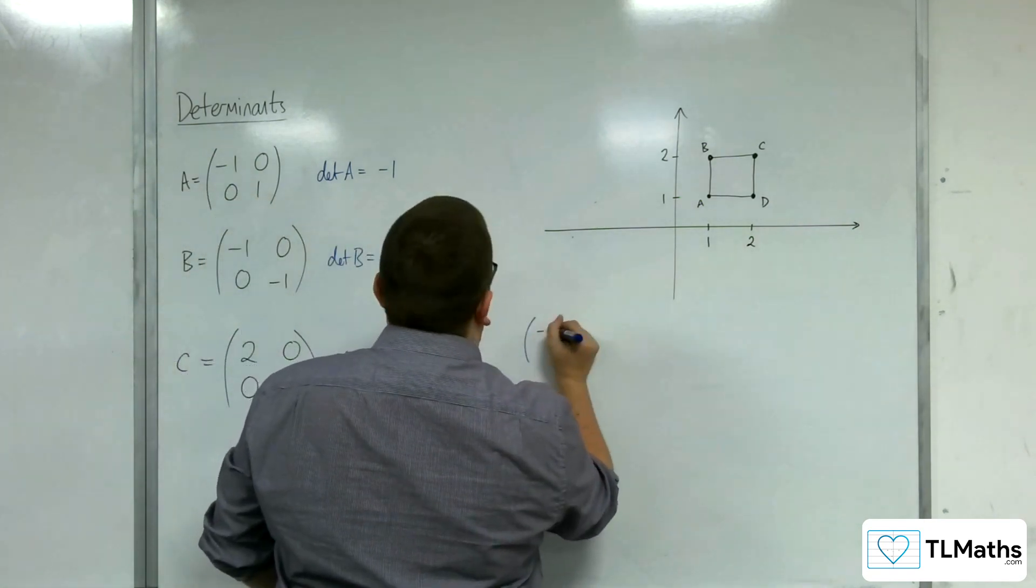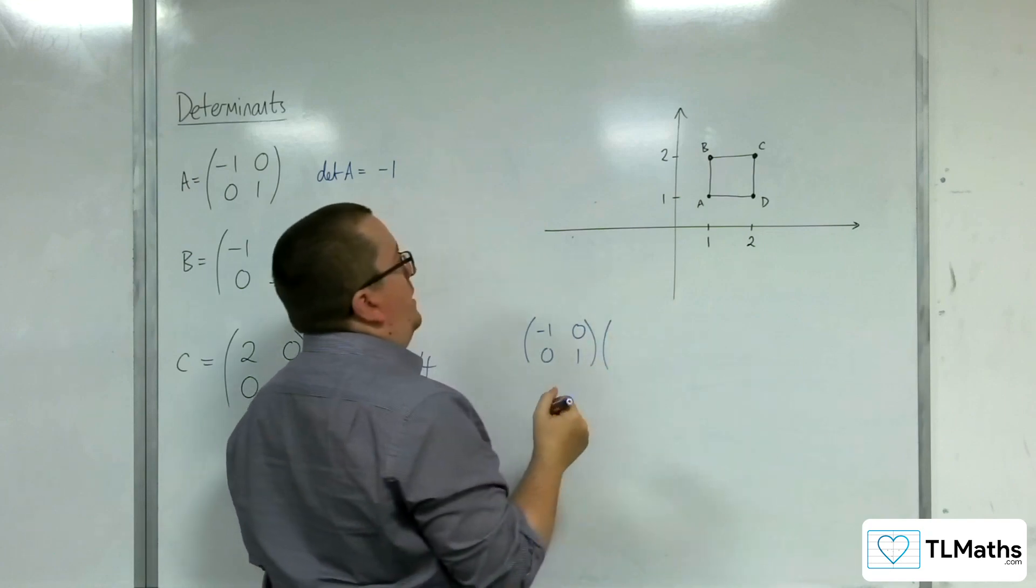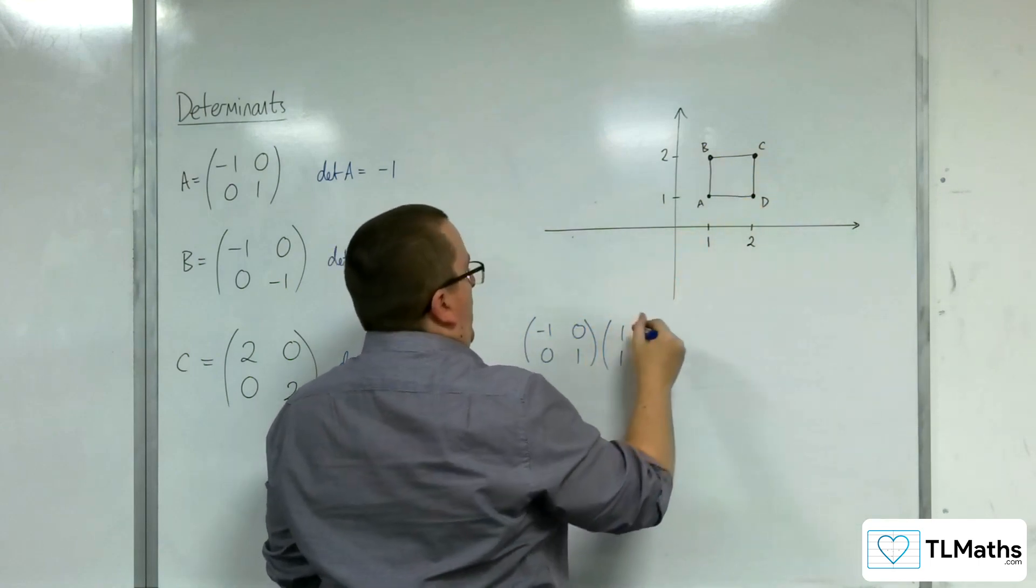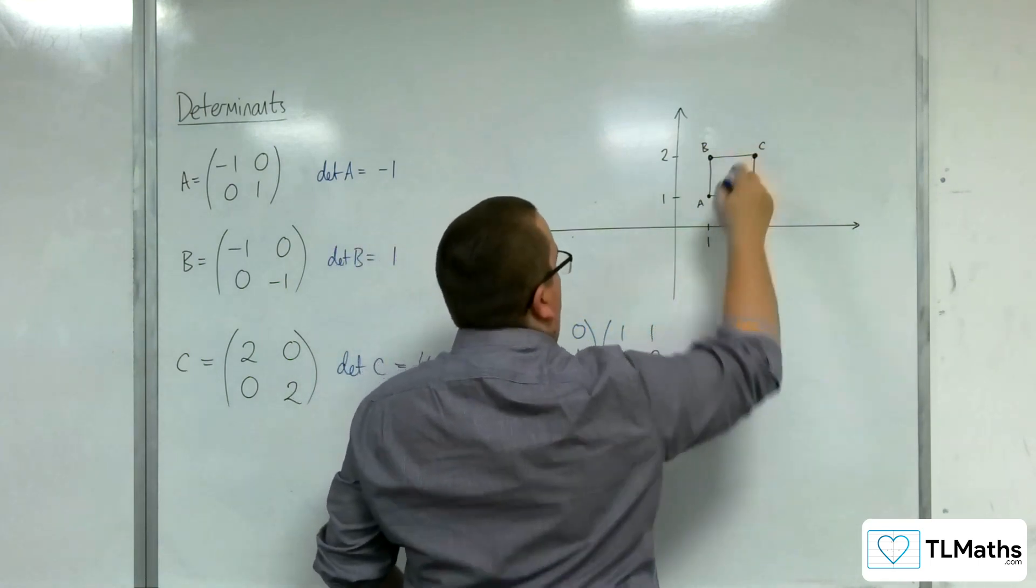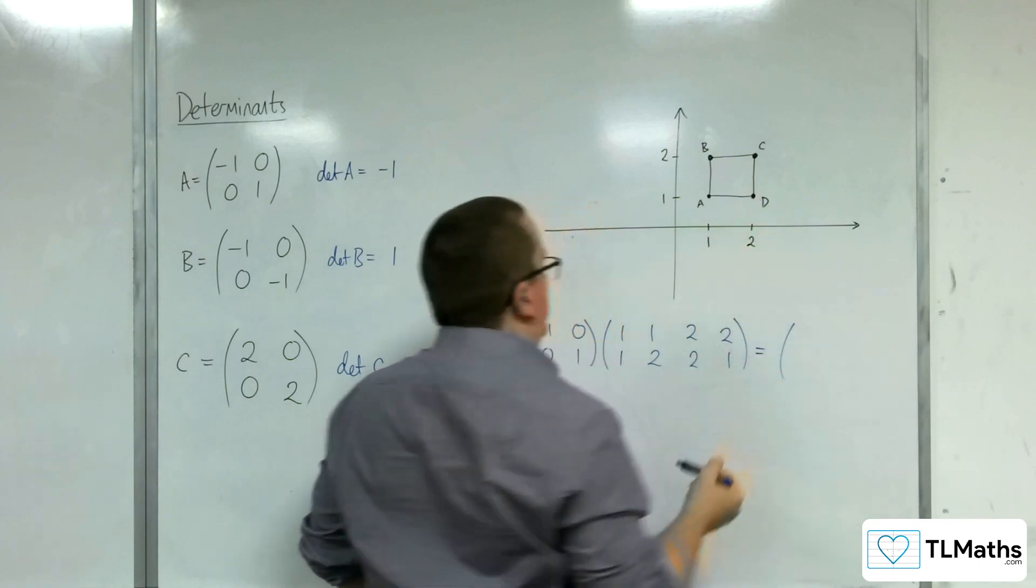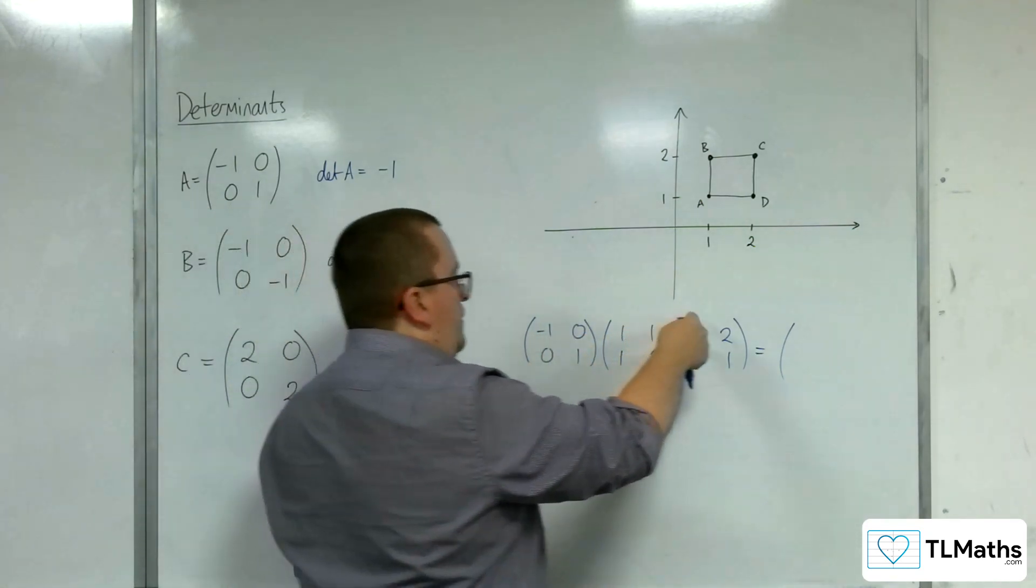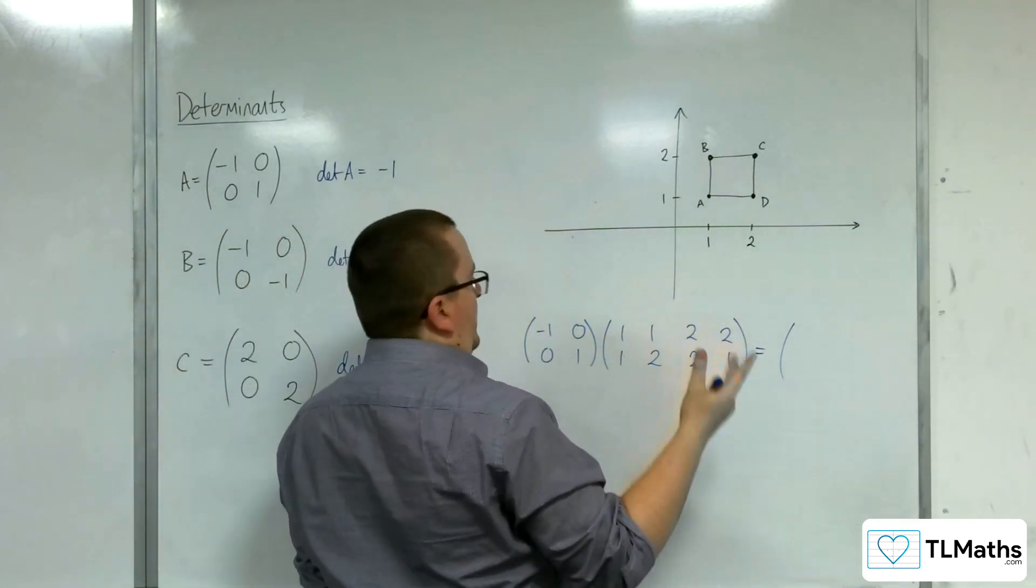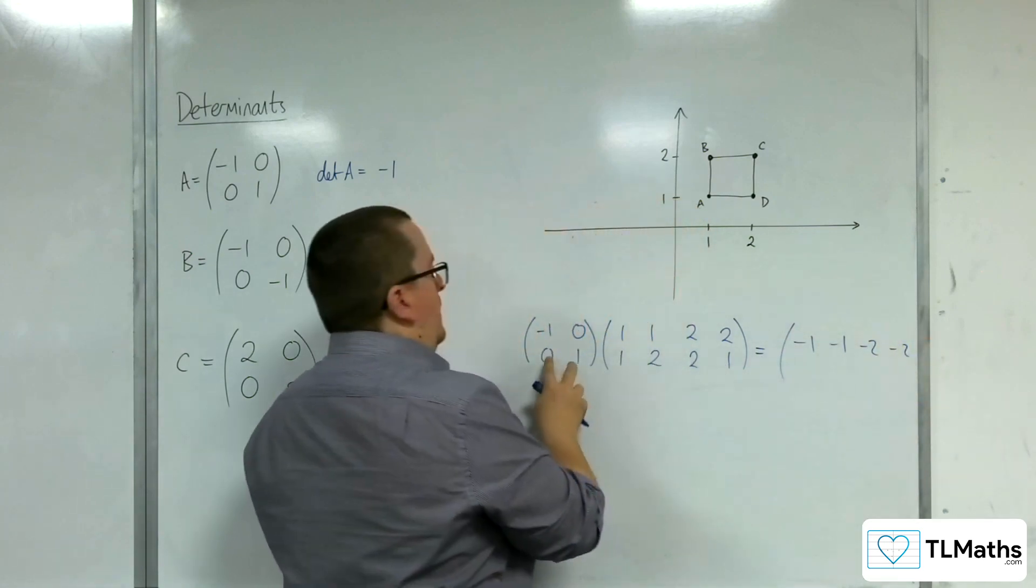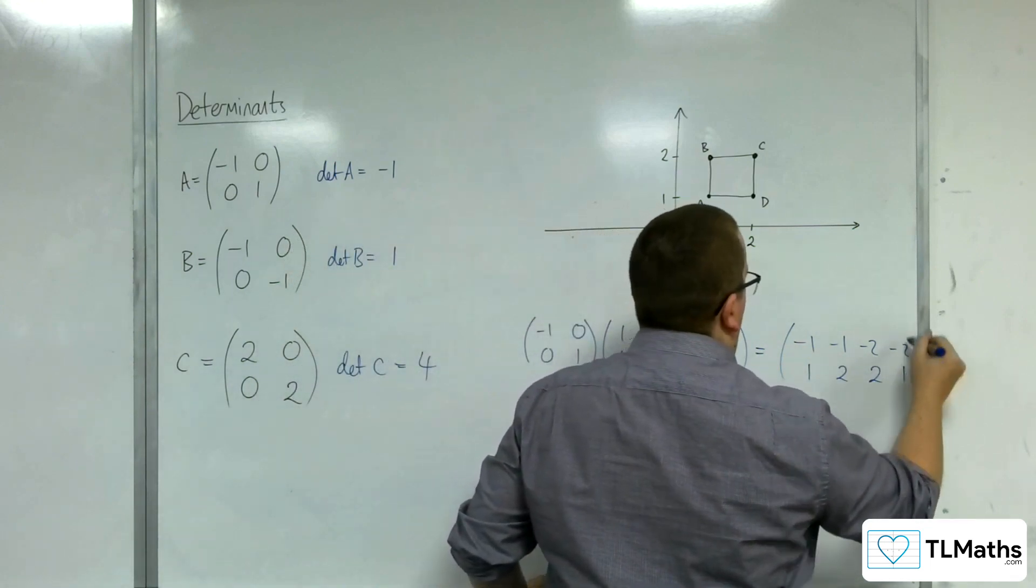So the first one, matrix (-1, 0; 0, 1), is going to be applied to (1,1), (1,2), (2,2), and (2,1) going round clockwise. So what do we get? Well, (-1, 0) times each of these will give me the top row but the negative. So -1, -1, -2, -2. And (0, 1) being applied to each of those will give me the bottom row: 1, 2, 2, 1.